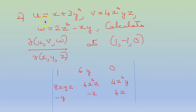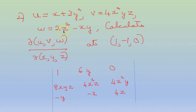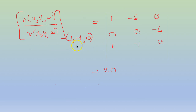Coming to the next problem: u is x plus 3y squared, v is 4x squared yz, w is 2z squared minus xy. Calculate the Jacobian at (1, -1, 0). We first calculate the Jacobian. The first column, partial derivative with respect to x, gives: 1, 8xy, and minus y. The second column, partial derivative with respect to y, gives: 6y, 4x squared z, and minus x. The third column, partial derivative with respect to z, gives: 0, 4x squared y, and 4z. Substituting x=1, y=-1, z=0 and expanding, you get the value as 20.